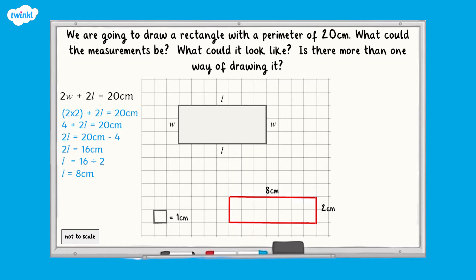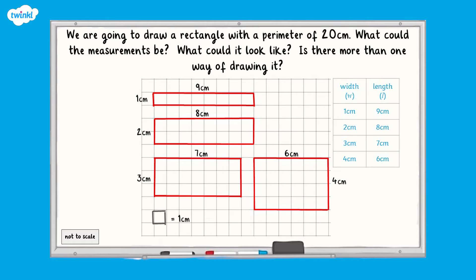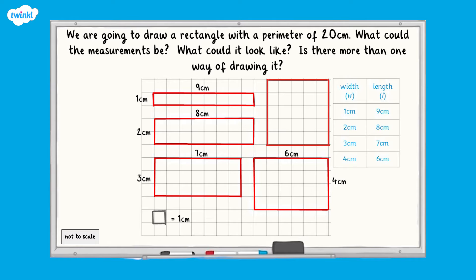Can you spot a pattern at all? When the width decreases by 1 centimetre, the length also decreases by 1 centimetre. Let's see if this continues. If the width became 3 centimetres, the length would become 7 centimetres. If the width became 4 centimetres, the length would be 6 centimetres. And if the width became 5 centimetres, the length would also be 5 centimetres — which is the square we drew earlier on.